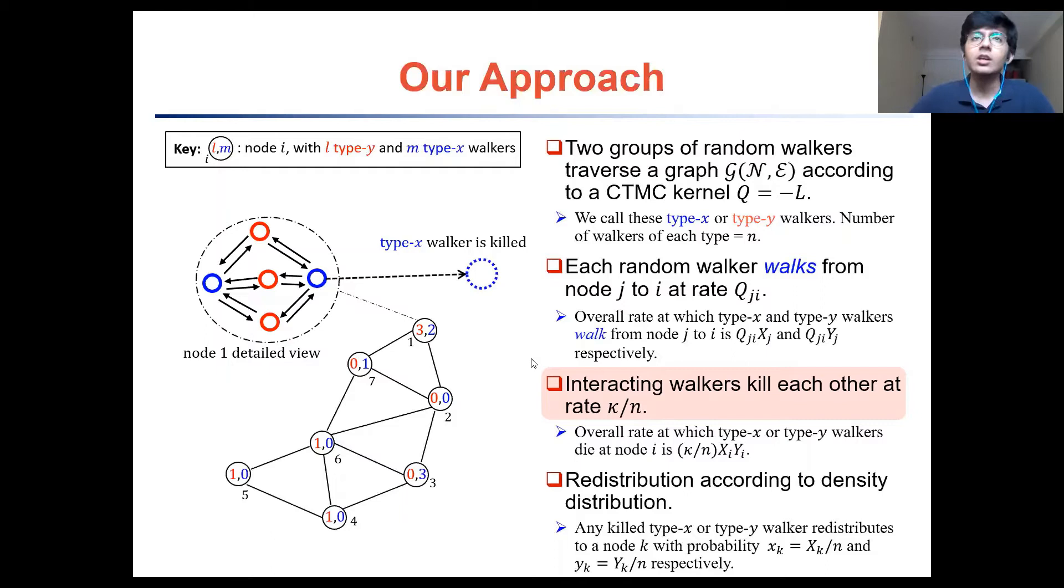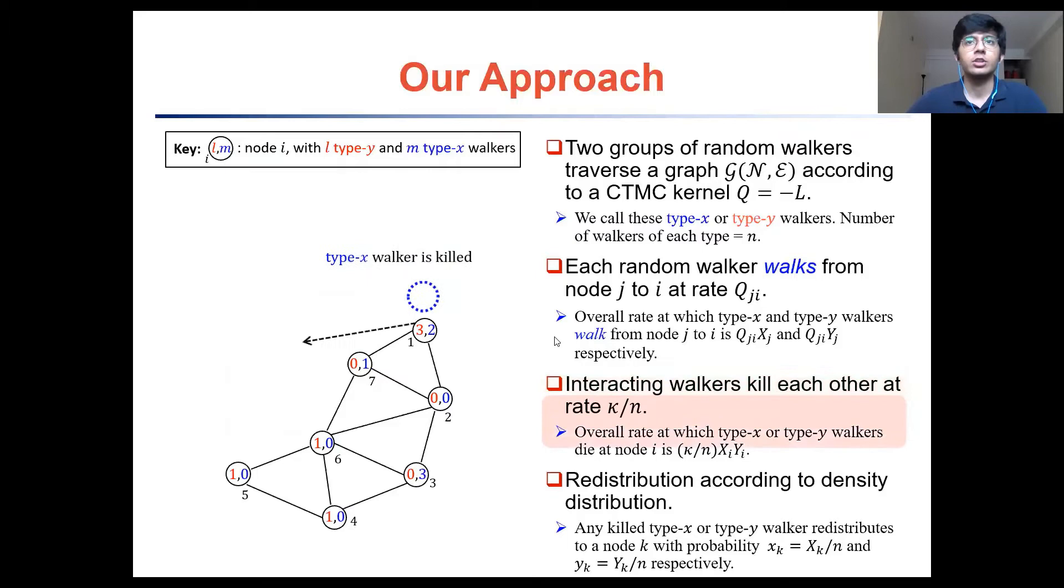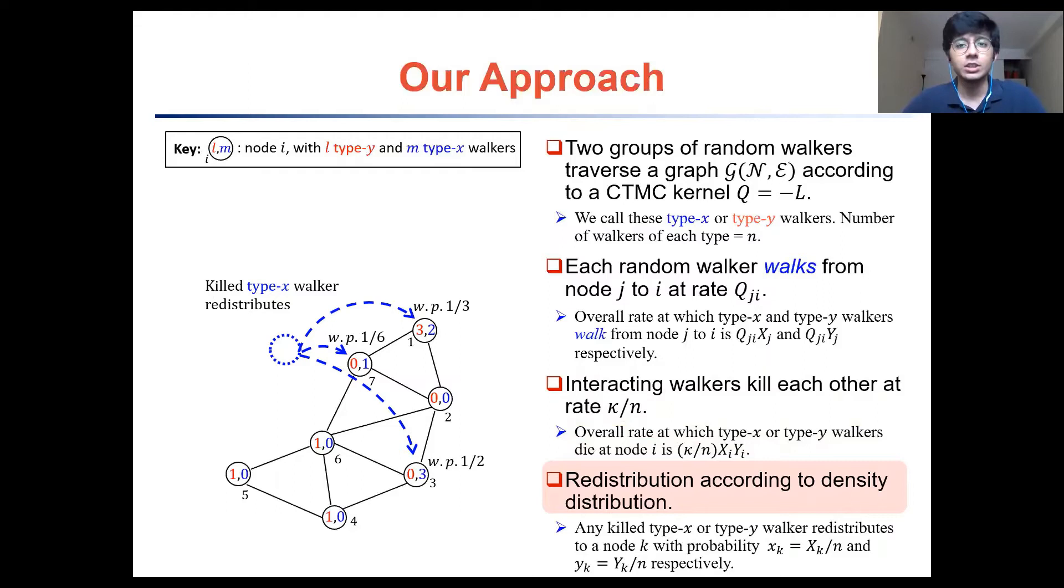Suppose that it is a blue walker that has been killed. We wish to preserve the number of walkers over the graph at all times, and to do this if a walker dies we relocate it over the graph to the position of one of the other walkers of the same type. So for example there is a blue walker which has been killed at node 1. We redistribute it to the position of one of its friends, another blue walker. This is also the same as redistributing according to the density distribution of blue walkers. And we also do the same thing if a red walker has been killed.